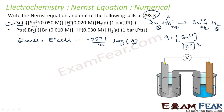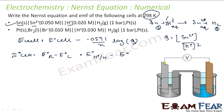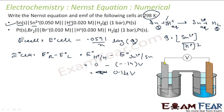E°_cell can be found from the electrochemical series chart. E°_cell = E°_right − E°_left. The right electrode is H⁺ → H₂ (reduction), E° = 0. The left electrode is Sn²⁺ → Sn (reduction), E° = −0.14 V from the table. So E°_cell = 0 − (−0.14) = +0.14 V.